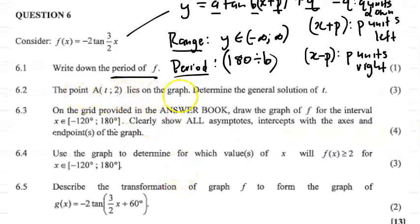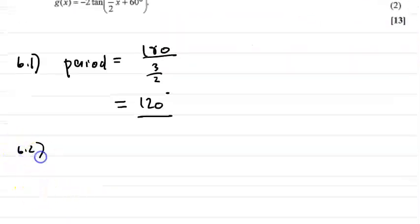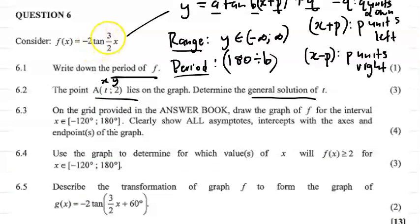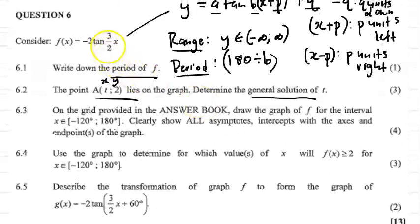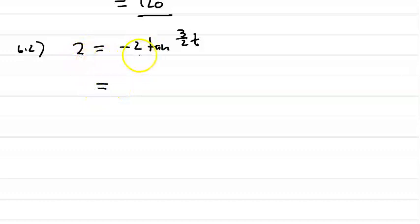Question 6.2: the point A(t, 2) lies on the graph. Determine the general solution of t. Just like any other function, if a point lies on the graph, we can substitute the x and y values. So we substitute A(t, 2) into this function. The y value is 2, so we get: 2 equals minus 2·tan(3/2·t). To work out our general solution, we need to make the tan function the subject, so we divide by minus 2, giving us: negative 1 equals tan(3/2·t).